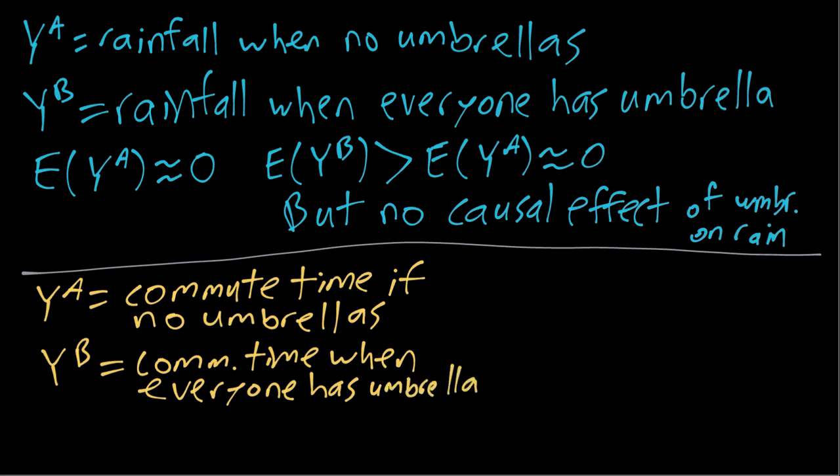Similar to before, if we think about descriptively what we would see in the population, in the case where there's no umbrellas, as in the previous example, if that indicates there's no rain, whereas when everyone has an umbrella it is raining, assuming that rain would slow down commute times, people need to drive more carefully, it's harder to see, or maybe you can't ride your bike and need to take the bus instead, we might imagine that the average commute time when everyone has an umbrella is longer than when they don't.